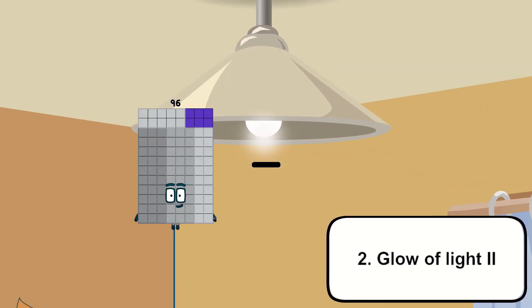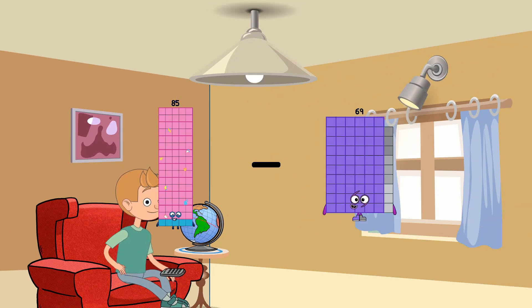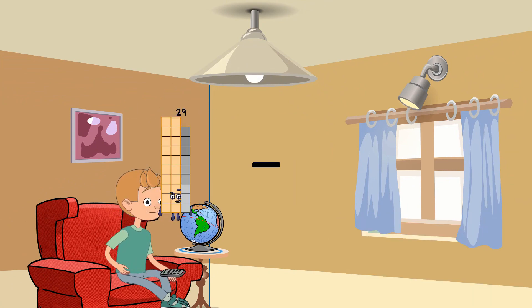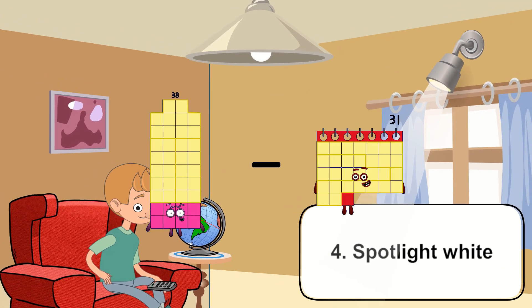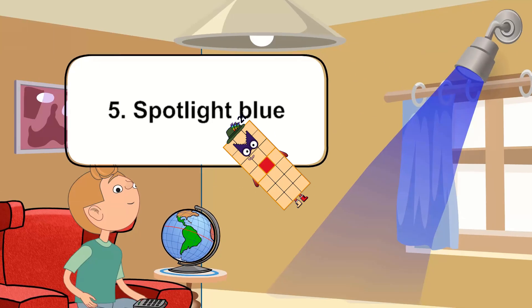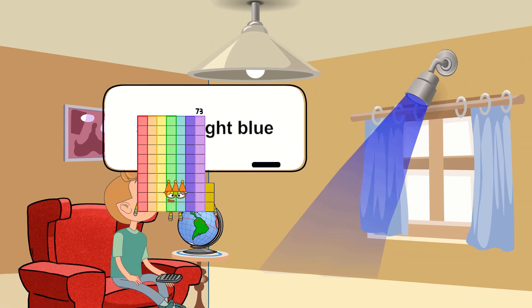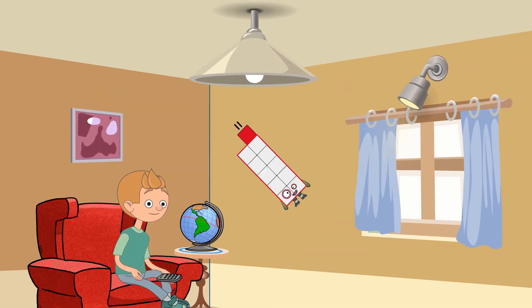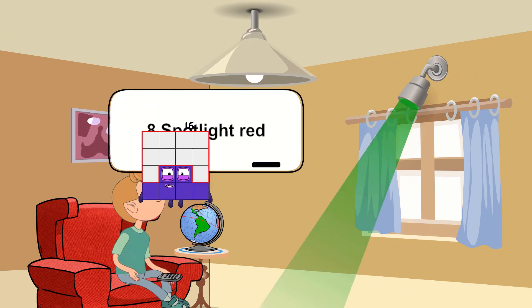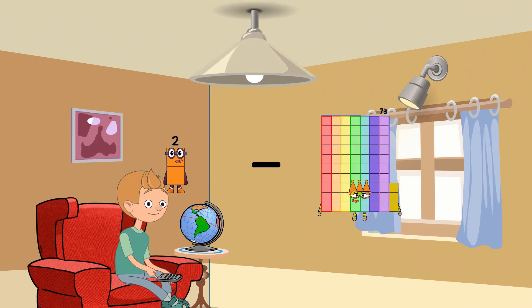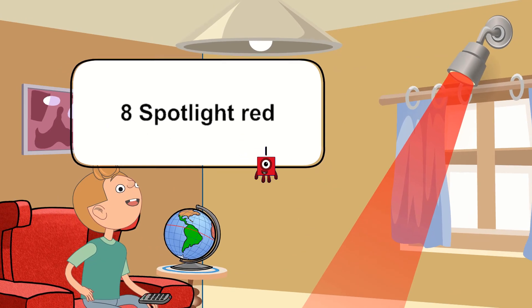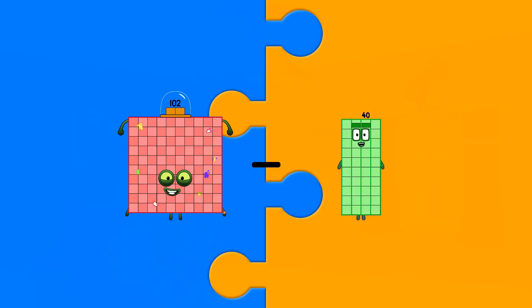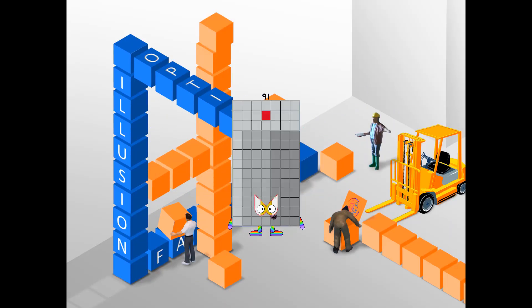85 minus 42 equals 43. 38 minus 17 equals 21. 12 minus 1 equals 11. 2 minus 1 equals 1. 102 minus 11 equals 91.